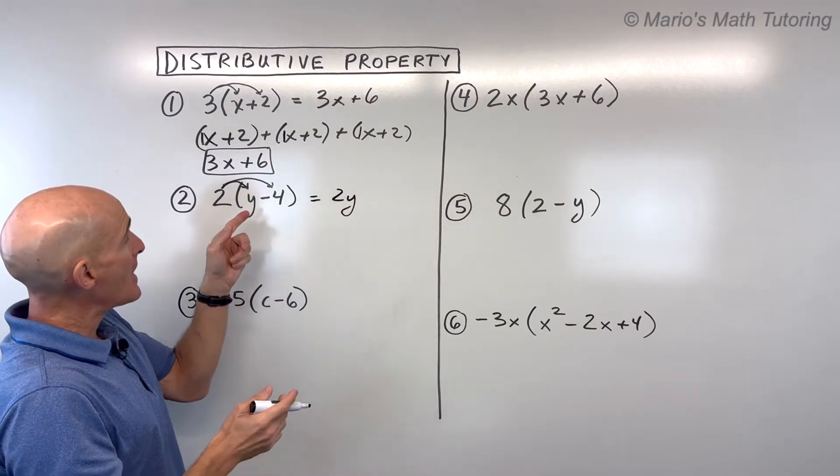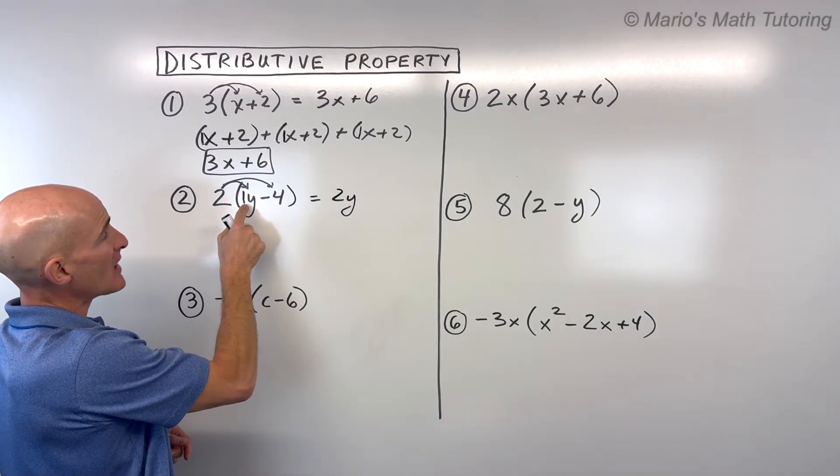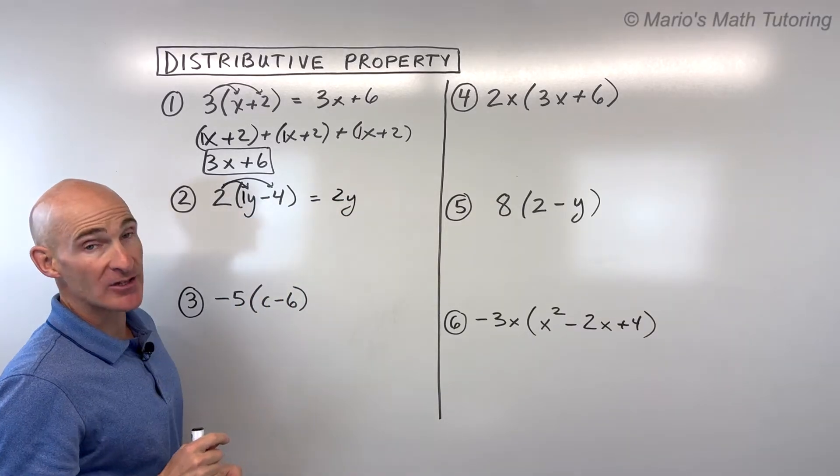Two times y is equal to 2y. Again, remember, if there's not a number to the left or in front of that variable, that's a one. And you can think of this as two times one, which is two times y, 2y.